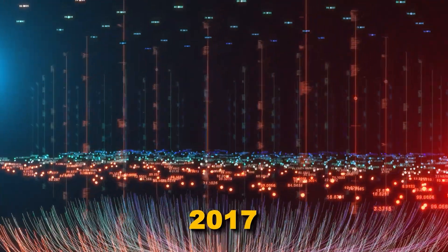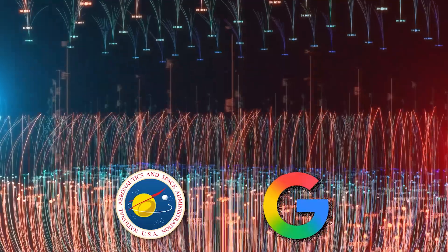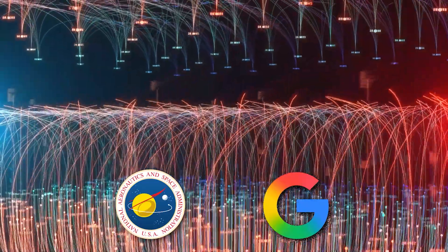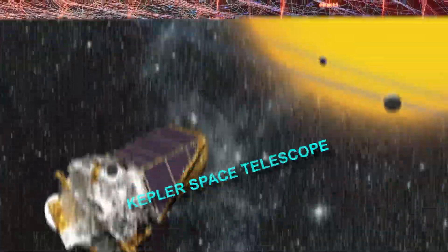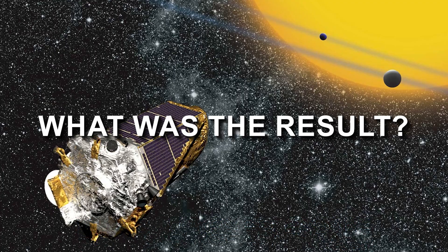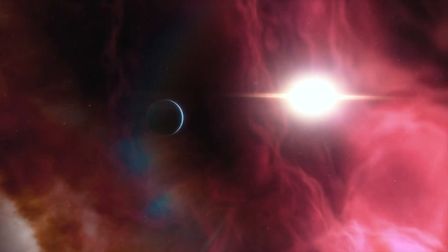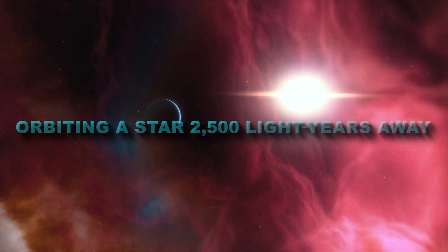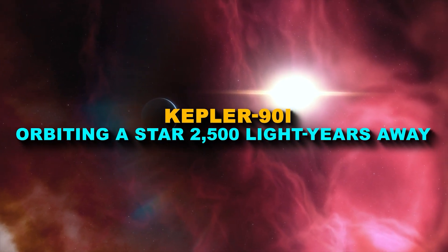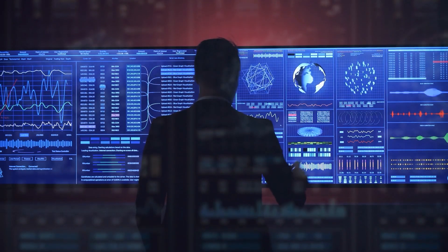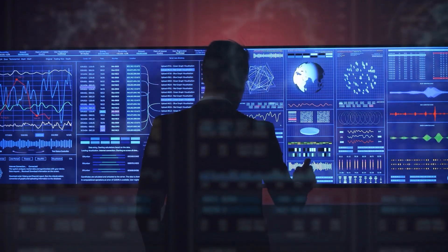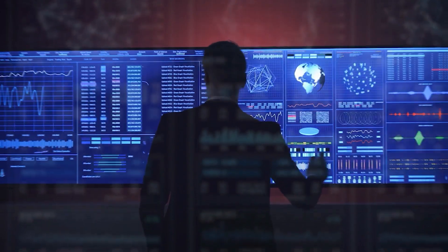In 2017, NASA and Google made history by training a neural network to analyze the vast datasets from the Kepler Space Telescope. What was the result? The AI discovered something huge, a previously unknown exoplanet. Kepler-90i orbiting a star 2,500 light-years away. But here's the twist. The data wasn't new. The signal was already there, buried in the archives. Humans just didn't notice it.